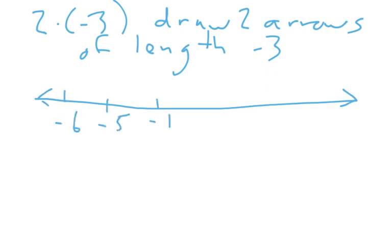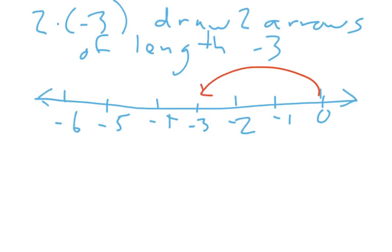So I draw my number line. Since we're moving to the left, I'm just going to draw negative numbers. Draw two arrows of length negative three: starting at zero, go three to the left, then go another three to the left. Two positive arrows means two to the right; two negative arrows means two to the left.